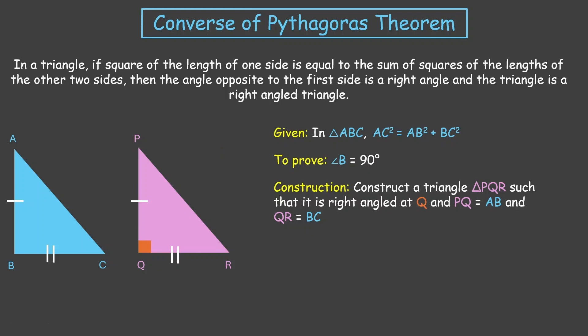Okay, now let us start the proof. In triangle PQR, by Pythagoras theorem, since Q is 90 degrees, PR² equals PQ² plus QR². This is the hypotenuse here, PR. So by Pythagoras, we will get this.